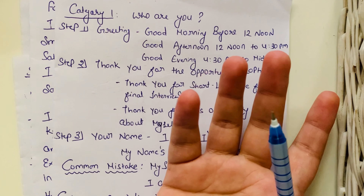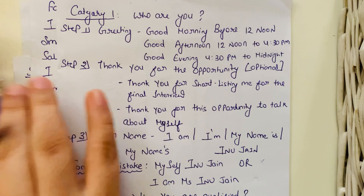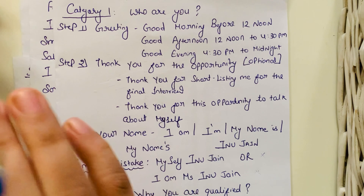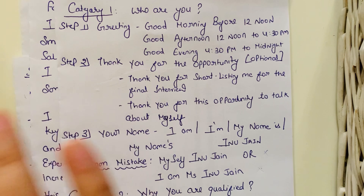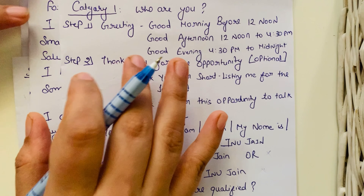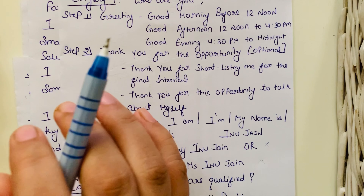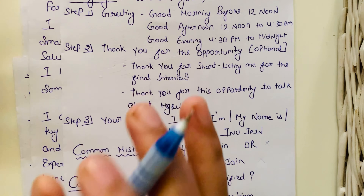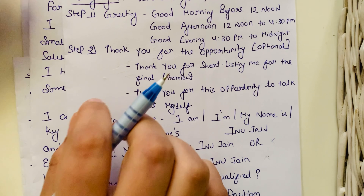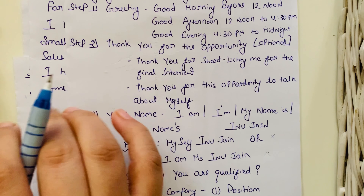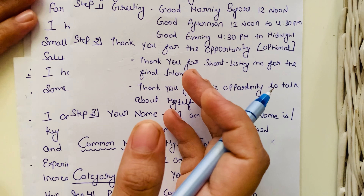The question 'tell me about yourself' comes in different forms — for example, 'walk me through your background' or 'take us through your resume.' But whatever form it takes, this is a trick question. The interviewer is asking you to tell them about yourself, yet they already know everything from your resume. What they're really asking is about your attitude towards work, what kind of person you are, and whether you're a good fit for the job.